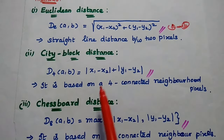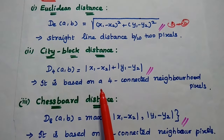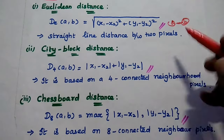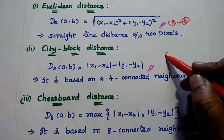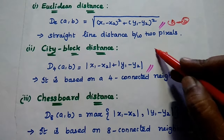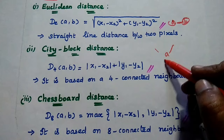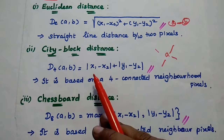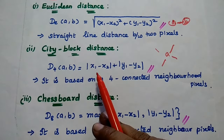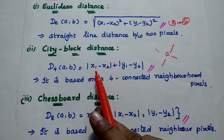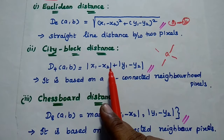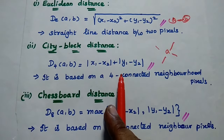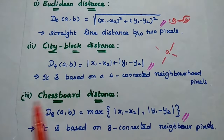The next one is city block distance. In this method we consider four connected neighborhood pixels. The distance is calculated as the modulus of (x1 minus x2) plus the modulus of (y1 minus y2).